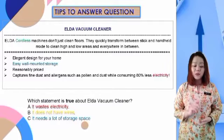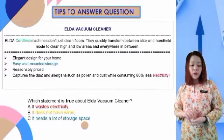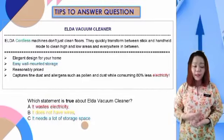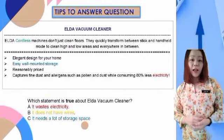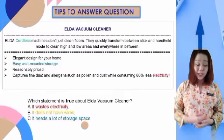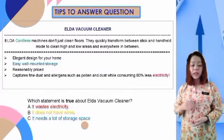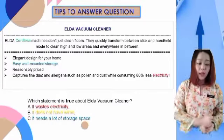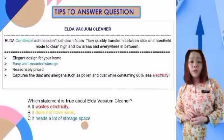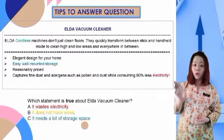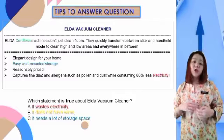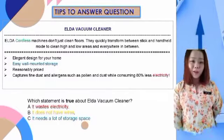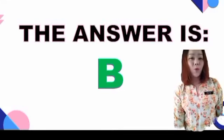Option B: it does not have wire. Looking at the word 'cordless' in the text, it means no wire. Therefore, option B is correct. Option C says it needs a lot of storage space. But from the text, easy wall-mounted storage means whatever is mounted on the wall doesn't consume much space. Therefore, option C is incorrect. The only correct answer is B — it does not have wires.